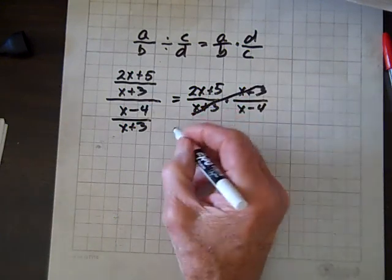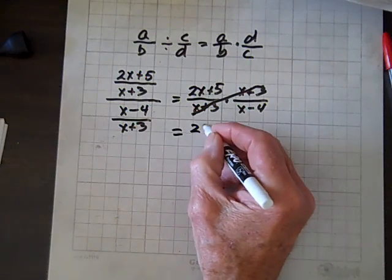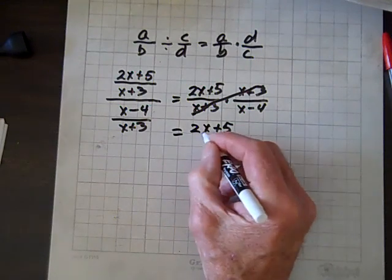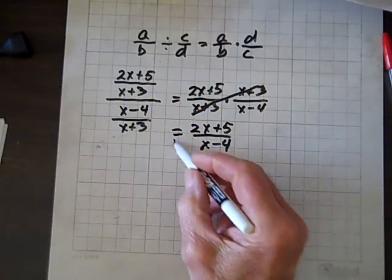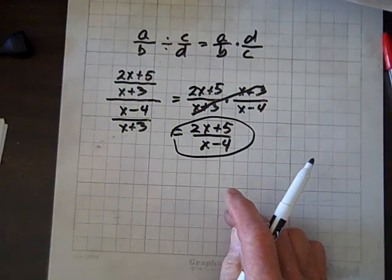These divide out and we get (2x+5)/(x-4). And we've got that one done.